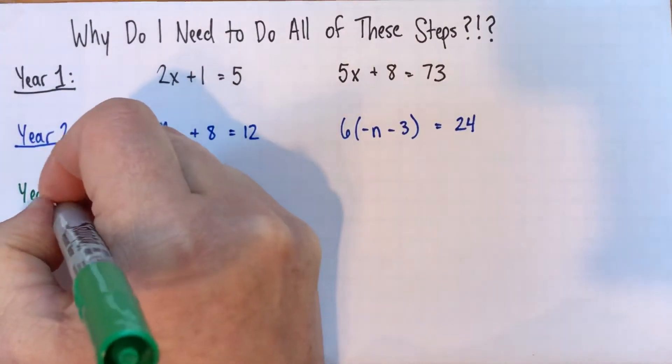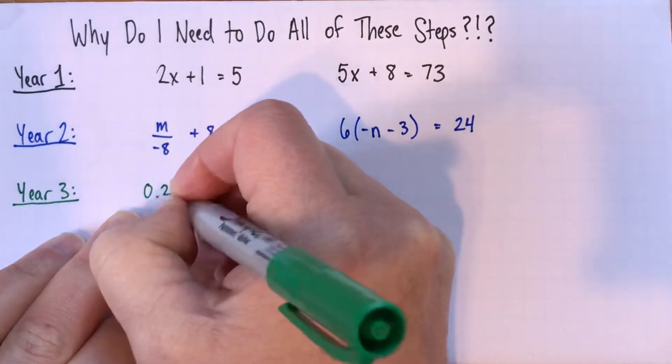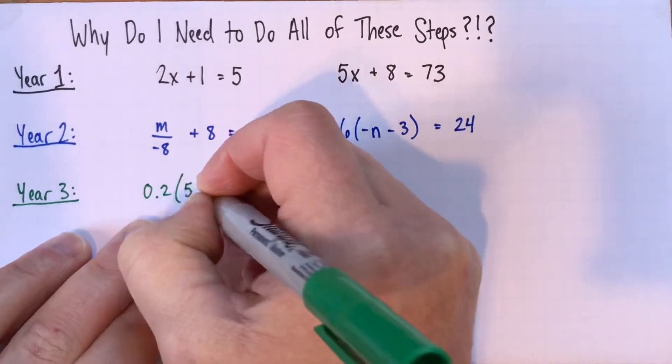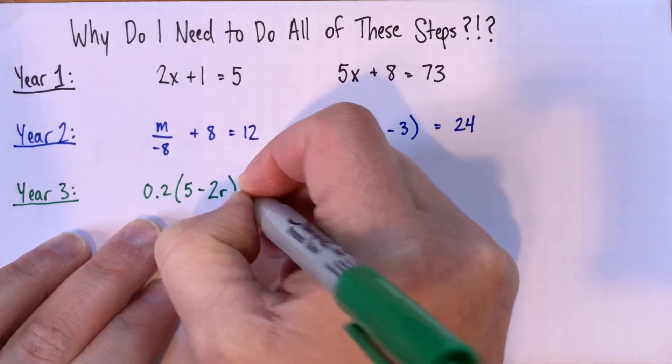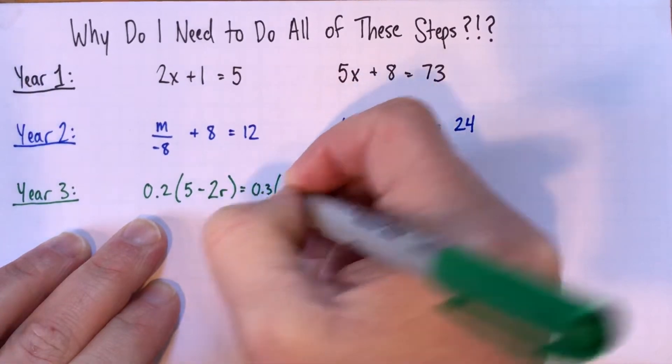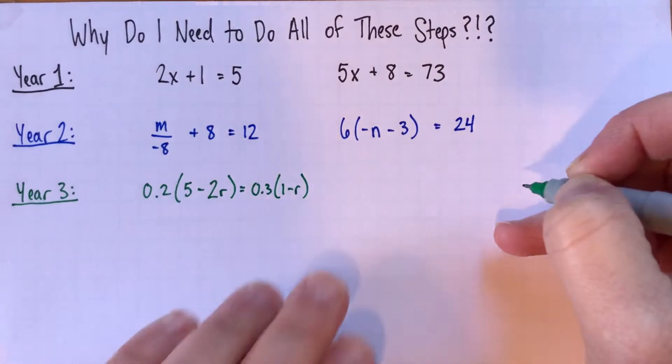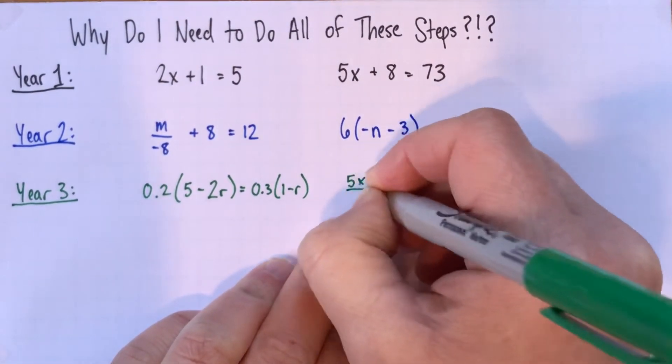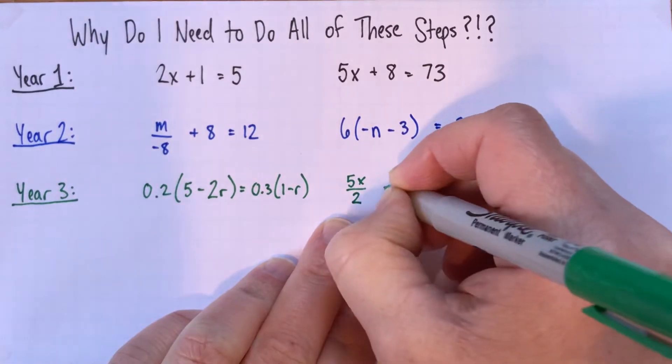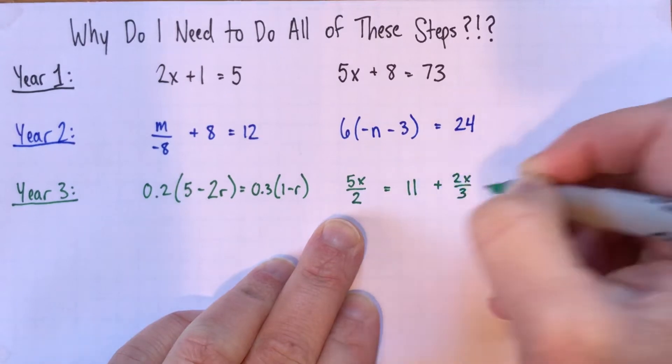So here's some from a year after. We've got 2 tenths times 5 subtract 2r equals 3 tenths times 1 subtract r. And here's another one from the same grade. 5x divided by 2 equals 11 plus 2x divided by 3. And we'll go one step farther for one more grade.